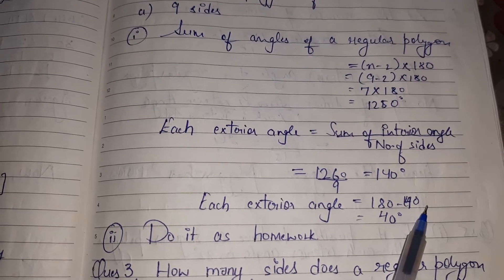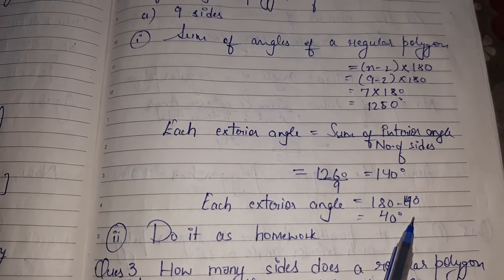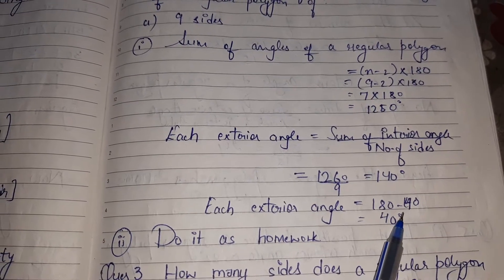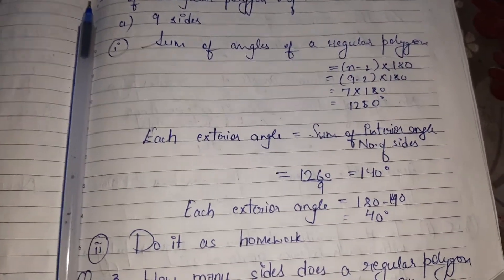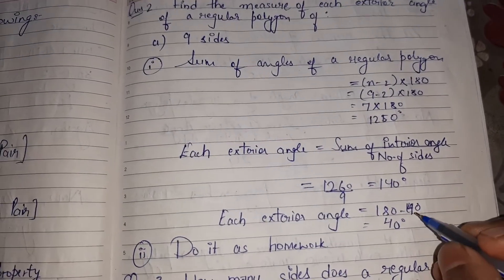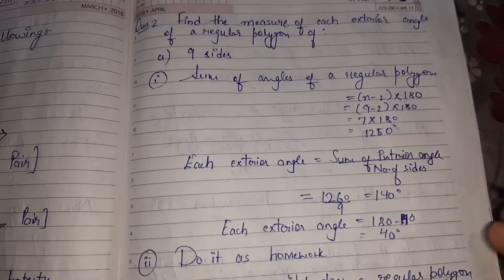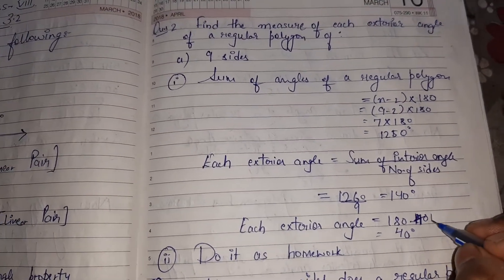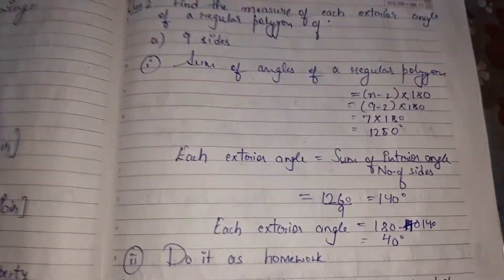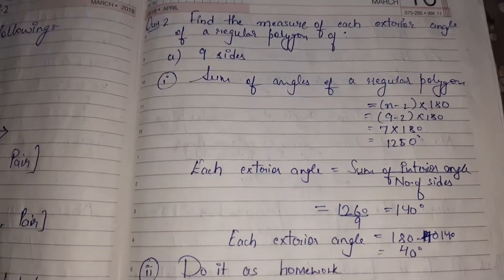We have to find each exterior angle, so we subtract from 180: 180 minus 140 comes out to be 40. We have got each exterior angle, which is 40 degrees. Got it everyone? This is the formula for finding it.